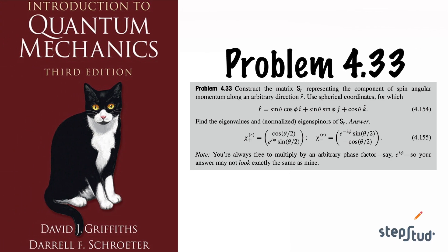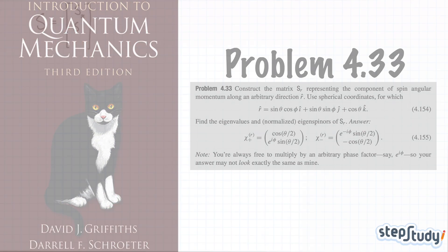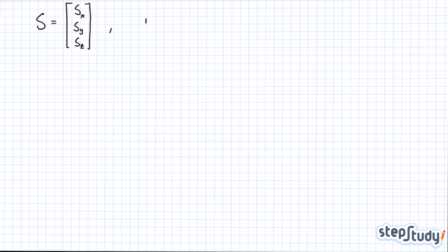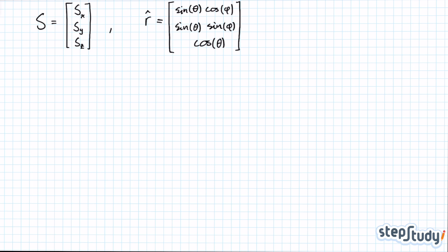Problem 4.33 in Griffiths' Introduction to Quantum Mechanics. This time we want to make a matrix that can be used to measure the component of spin in any arbitrary direction in space. The direction we're interested in is called r-hat, the unit vector from Cartesian coordinates given by the angles theta and phi. Finding the component of spin in the r direction can be done by taking the inner product between the spin vector and the r vector.